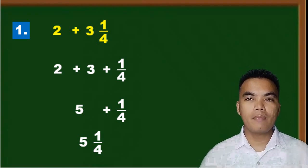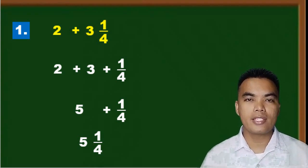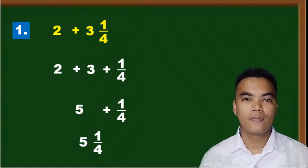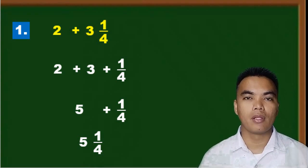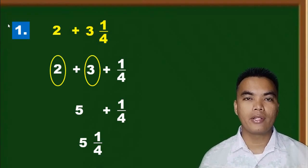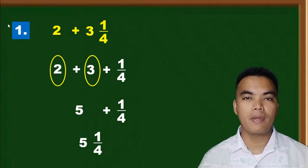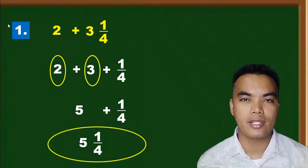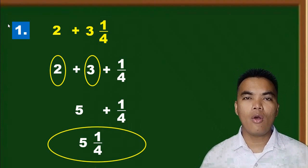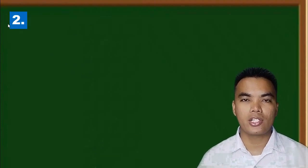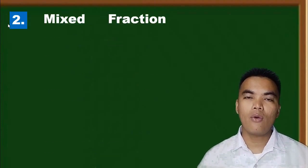Remember, you add separately the whole number and the fraction. In this example, the whole numbers are two and three, so two plus three is five, plus one fourth gives five and one fourth — that is our answer.